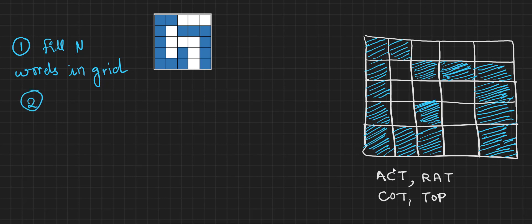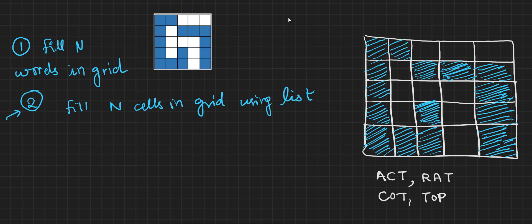The second option is we do not worry about the given list. Instead, we worry about the empty cells — we define the problem size in terms of how many cells have to be filled. So here it was 'fill n words in the grid,' and the second approach is 'fill n cells in grid using list.' In this approach, we do not rely on the given list; instead we need a list of tasks — a collection of the work that we have to complete.